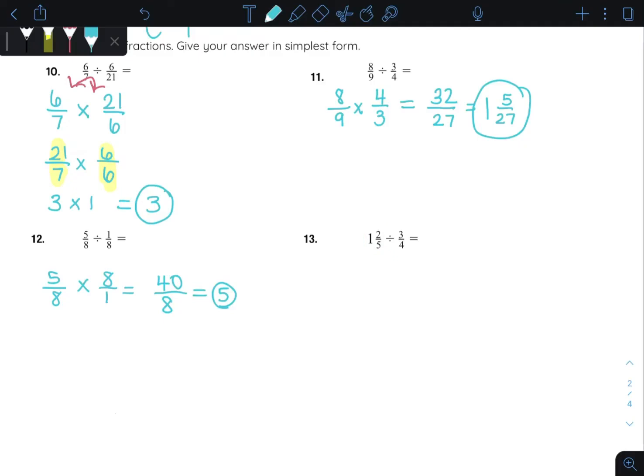Last one. Got a mixed number here. Let's turn it into a fraction. So five times one, and then add the two. So five plus two is going to be seven-fifths divided by three-fourths. Keep it, change it, flip it. Seven times four. Five times three. And we can try to make this into a mixed number. So it would be one. And if you're not sure, you've got to figure out now what's the difference here between fifteen and twenty-eight. So it's going to be thirteen-fifteenths.